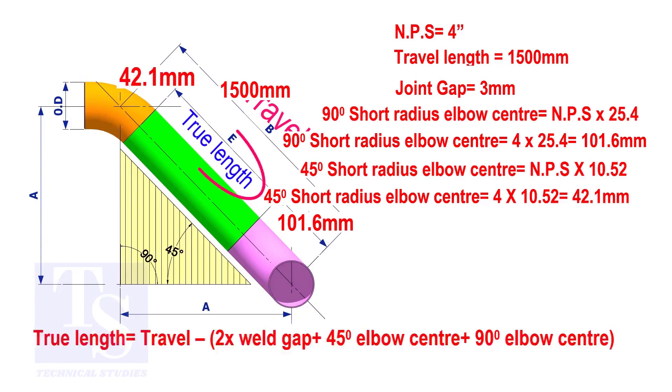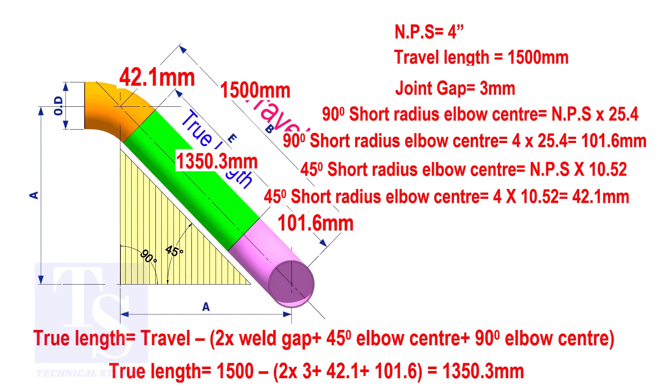To calculate the true length of the pipe, subtract two weld gaps plus both elbow centers from the travel length. The true length of the pipe is 1350.3 millimeters.